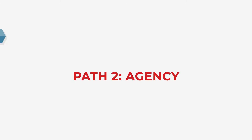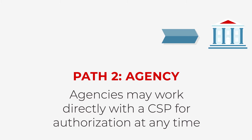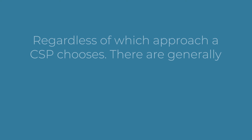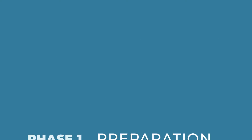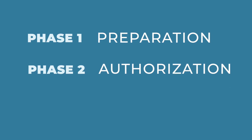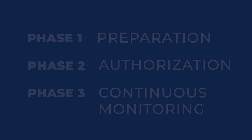In the second option, agencies may work directly with a cloud service provider for authorization at any time. Regardless of which approach a CSP chooses, there are generally three phases to this process: preparation, authorization, and continuous monitoring.